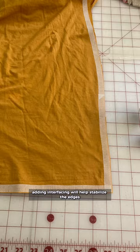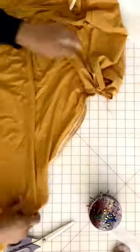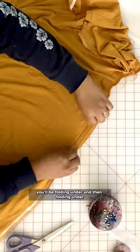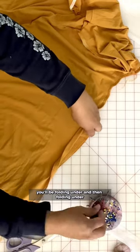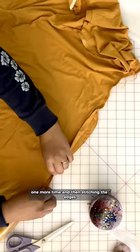Adding interfacing will help stabilize the edges. To finish off the seam, you'll be folding under and then folding under one more time, and then stitching the edges.